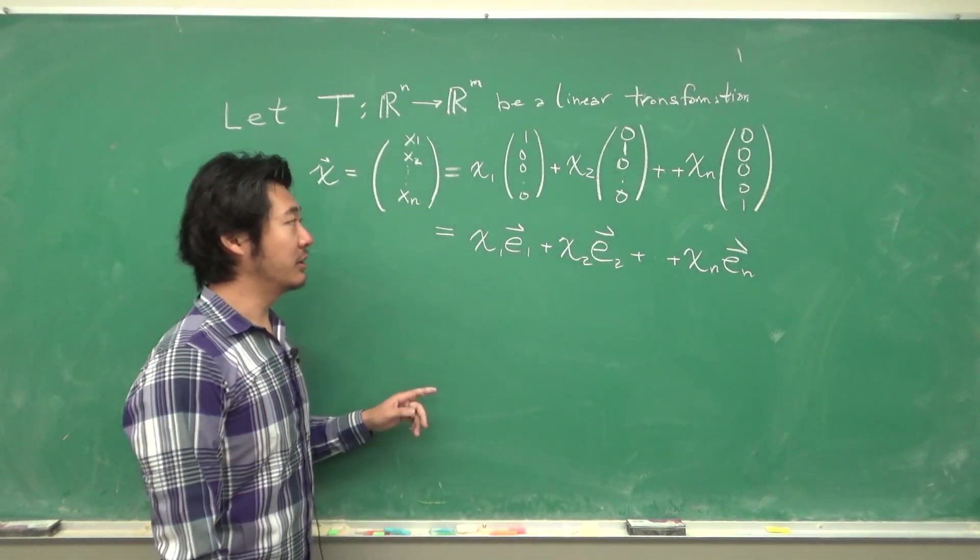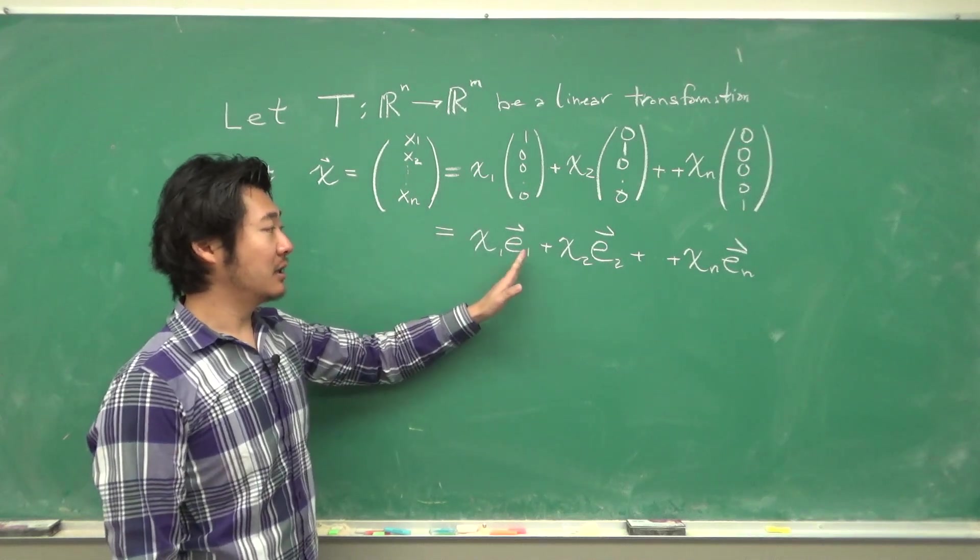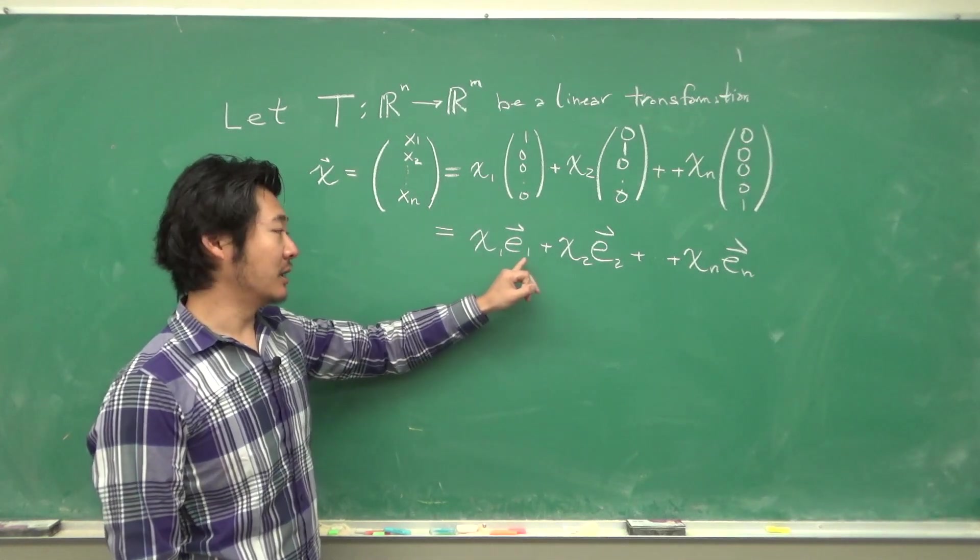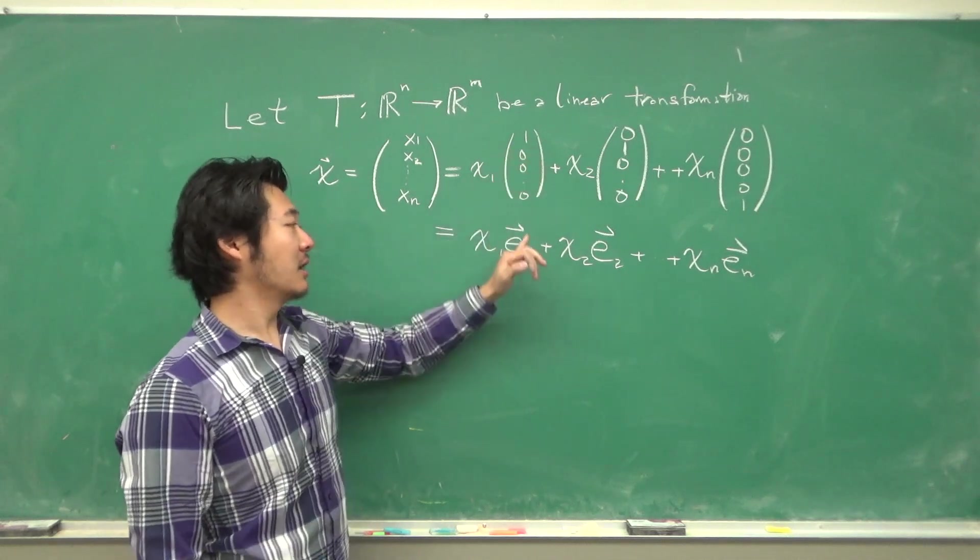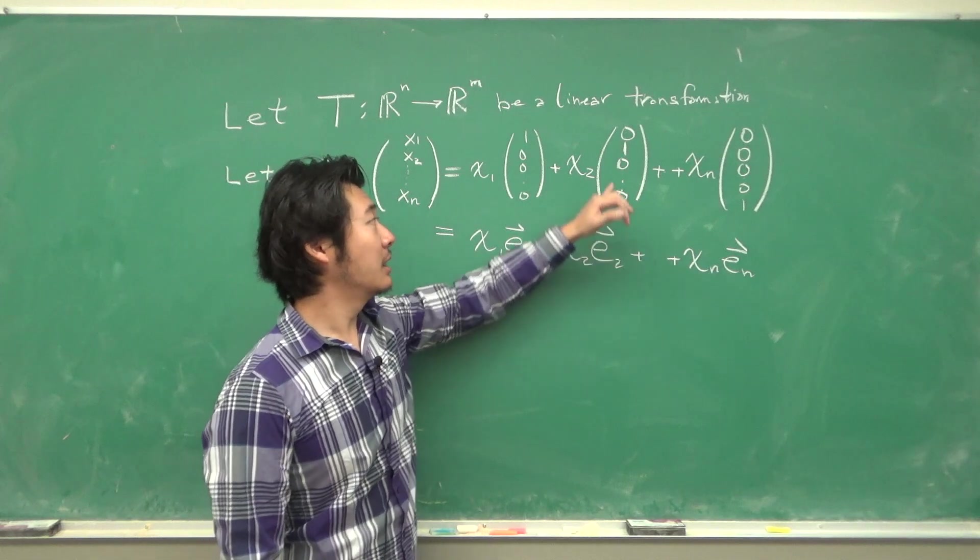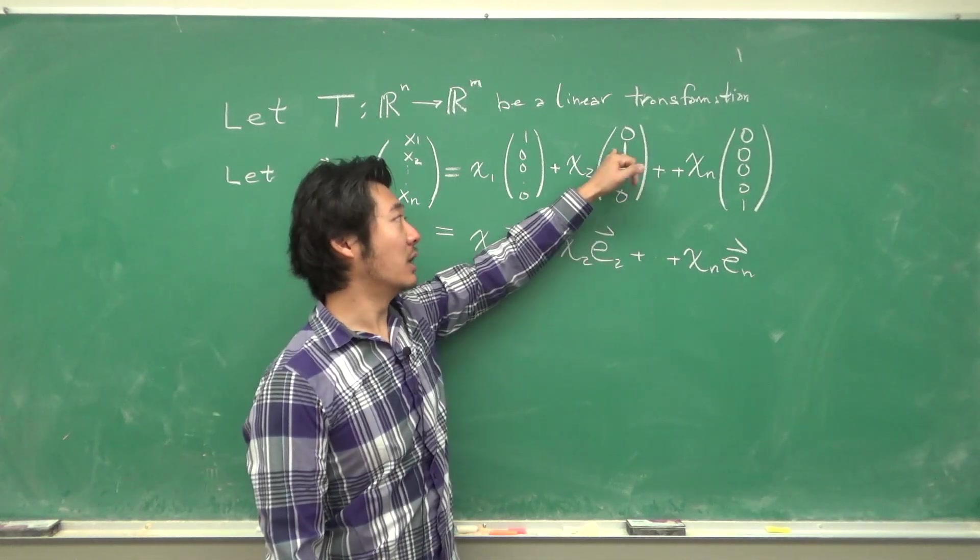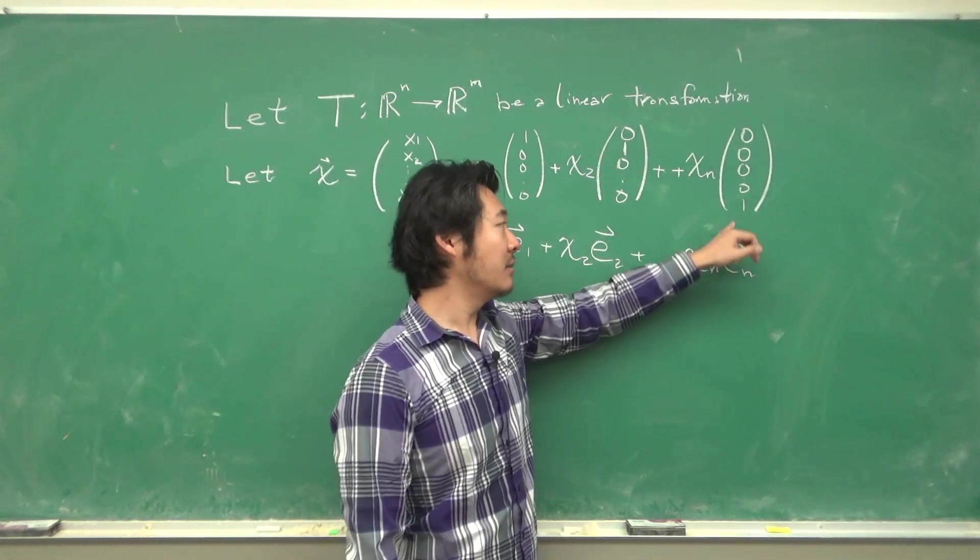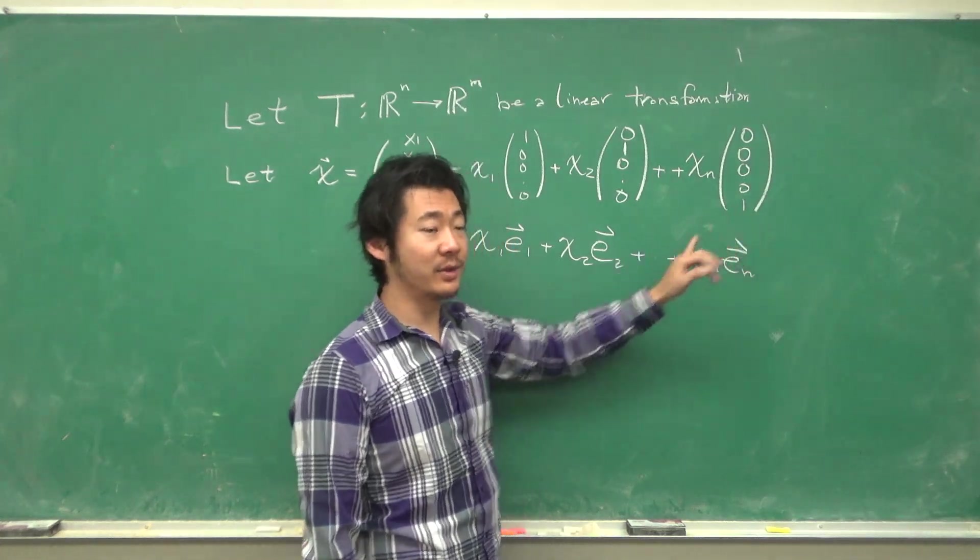The standard notation for these types of vectors is e with the number 1 being the position where we have a 1. So here, e₂ is because 1 is on the second position and then we have eₙ because 1 is on the nth position.